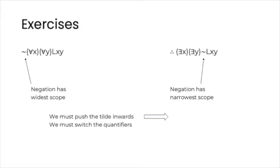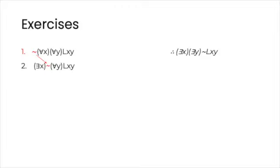However, we can't do it all in one step — we need to swap one quantifier at a time, and also move the negation to the right one place at a time. So on line two, we move the negation to the next available place to the right, and then change our quantifier from universal to existential. Thus, we end up with this intermediate sentence, which is equivalent to the one on line one. We annotate this as QN — short for quantifier negation — on line one. The second step, on line three, is going to be basically the same: leaving everything else untouched, we move the negation sign to the next slot to the right, just in front of the sentence Lxy. Then we replace the universal quantifier with an existential. The justification is QN, line two. And so we have arrived at our conclusion in two applications of quantifier negation.